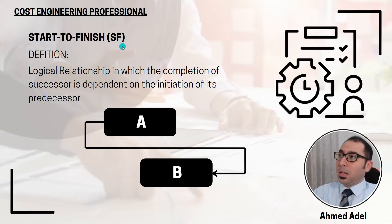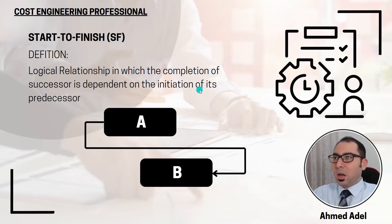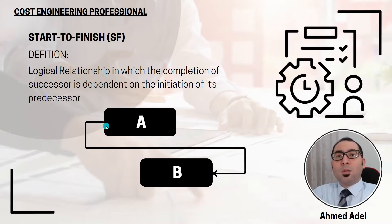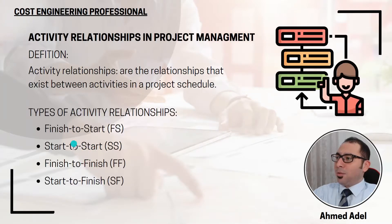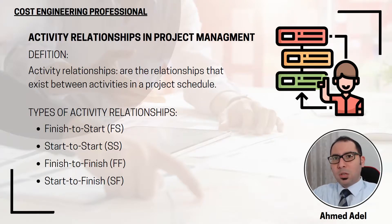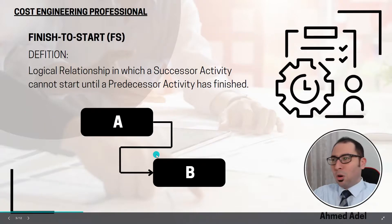The fourth and last relationship is start-to-finish. This is a logical relationship in which the completion of the successor is dependent on the initiation of its predecessor. In other words, for B to end, A has to start. Among all four relationships, finish-to-start and start-to-start are the most commonly used. Finish-to-finish appears but mainly to avoid open relationships. Start-to-finish is rarely encountered.